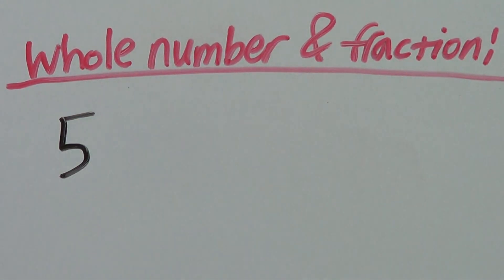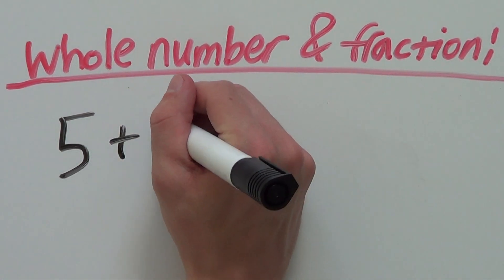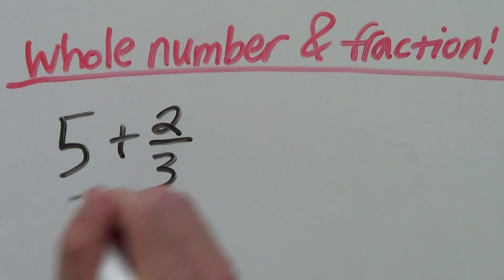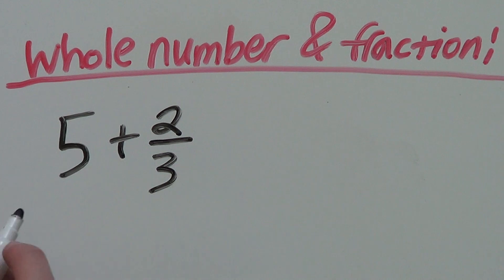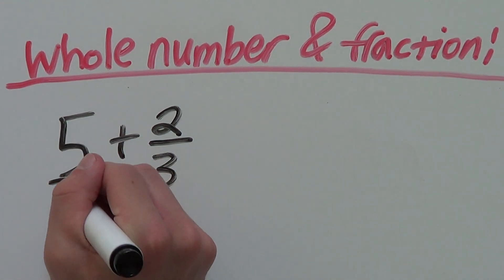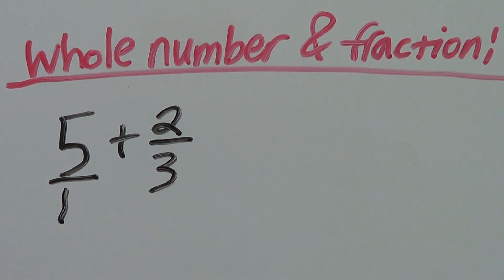Let's say we have the whole number 5, and we want to add that to the fraction 2 thirds. Firstly, we can rewrite this 5 as 5 over 1, and now we are adding 2 fractions together.